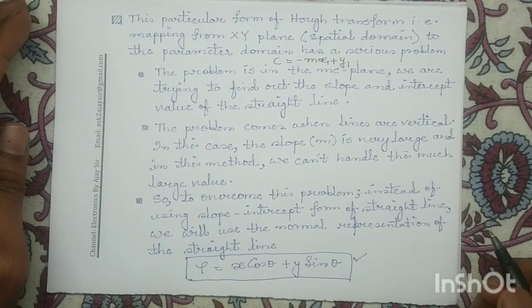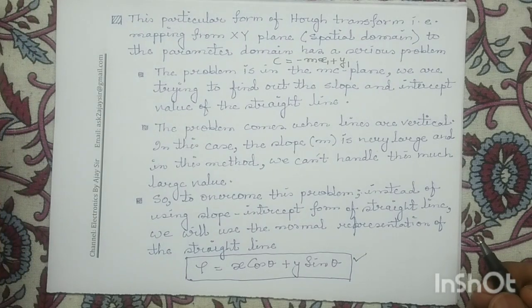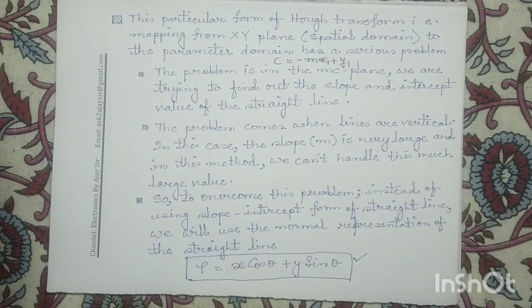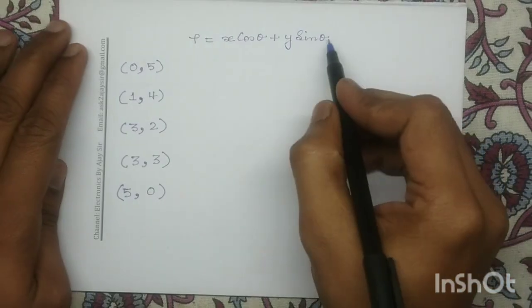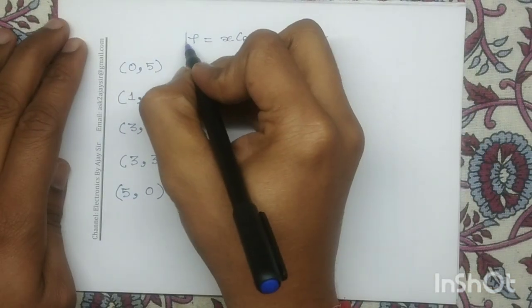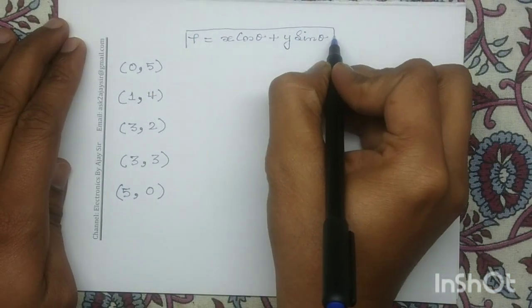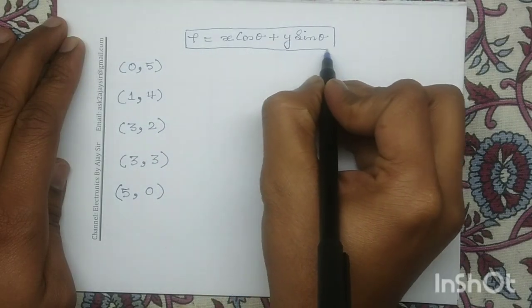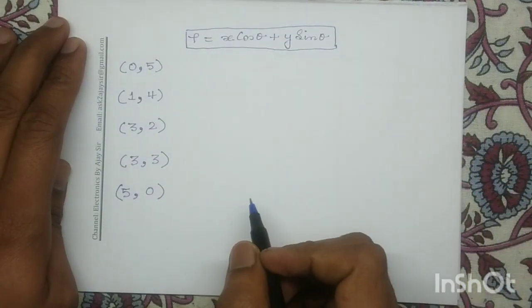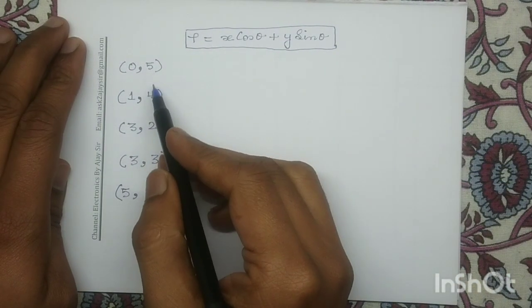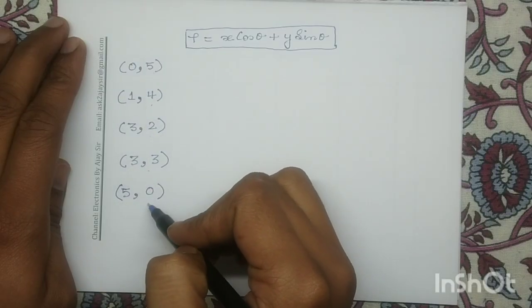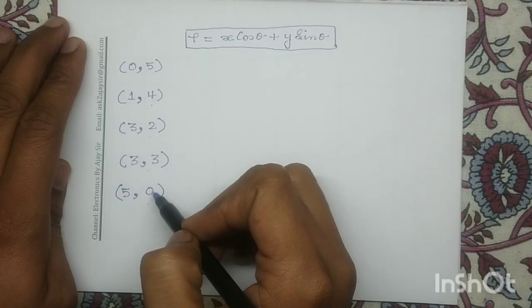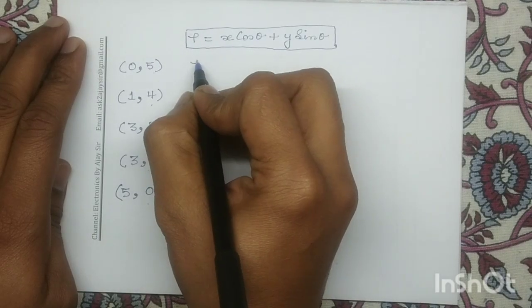So how do we solve a numerical question based on this equation? We will use ρ = x·cos(θ) + y·sin(θ) to determine the equation of line for the given points: (0,5), (1,4), (3,2), (3,3), and (5,0). For each of these points we will determine the equation of ρ.